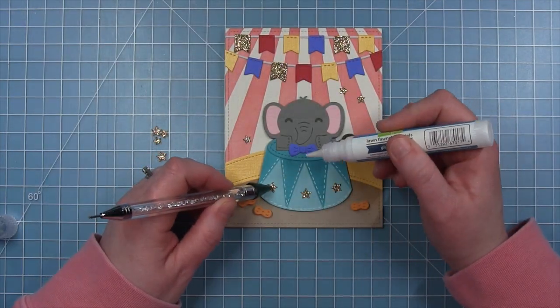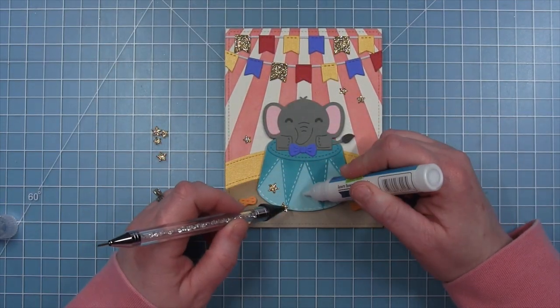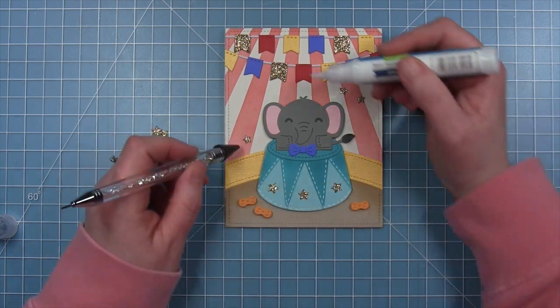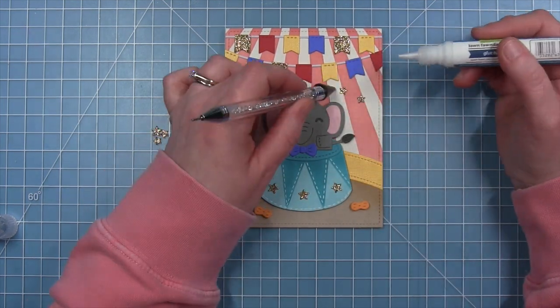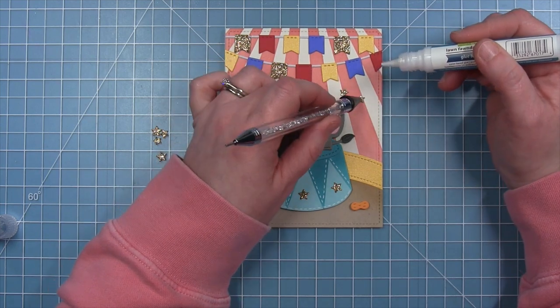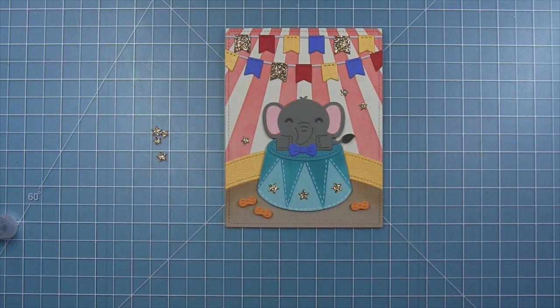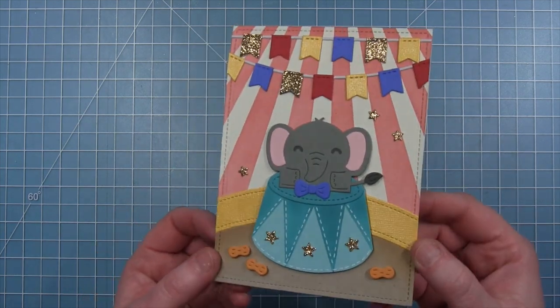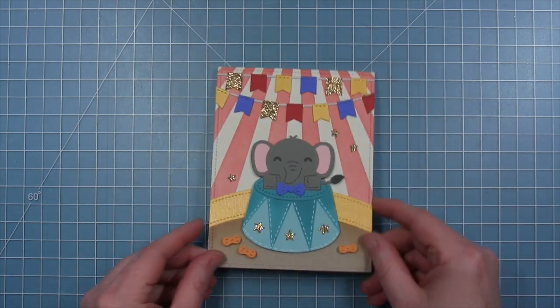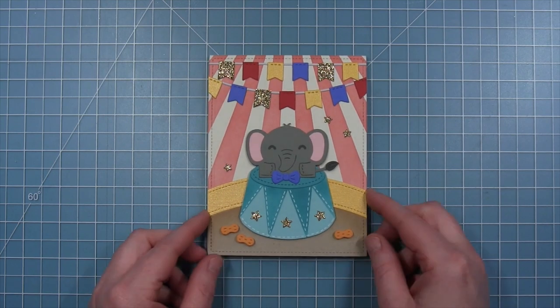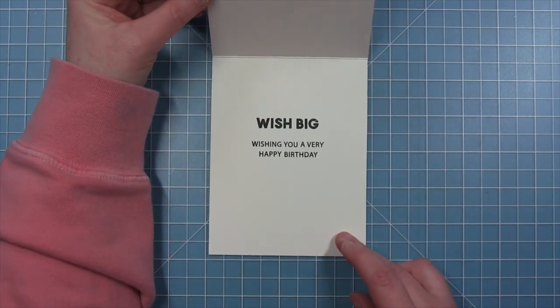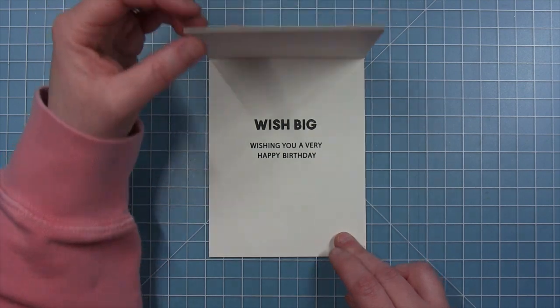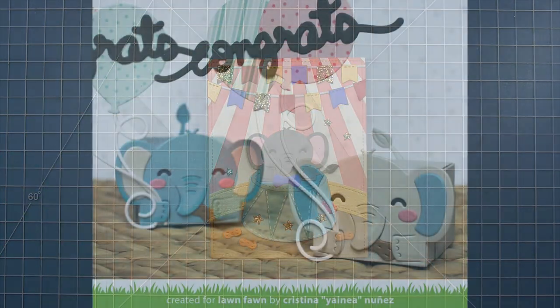And here are the gold stars that I added. I added one to each of those little zigzag pieces on the elephant stand, which I think really finishes that off nicely. And then a couple around in the background. And I just think this turned out so adorable. I love the orange circus peanuts. That might be my favorite part. And I also love that elephant stand that I made with the little stars. I just think it turned out so cute.